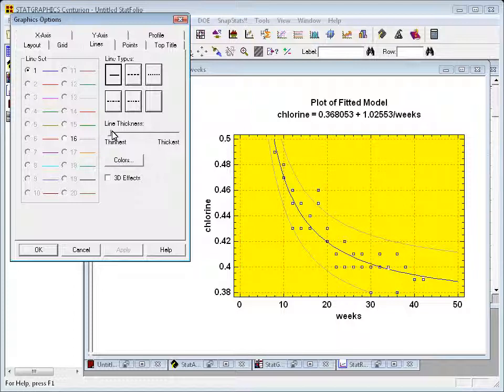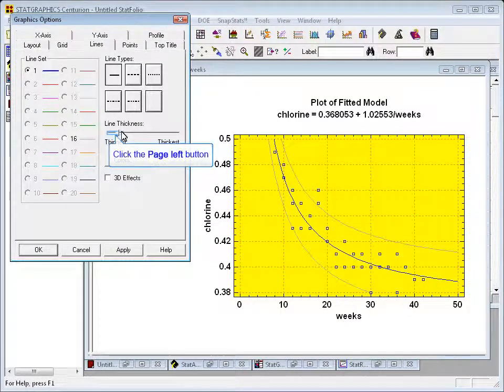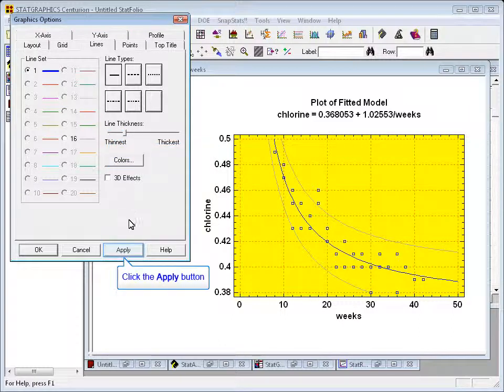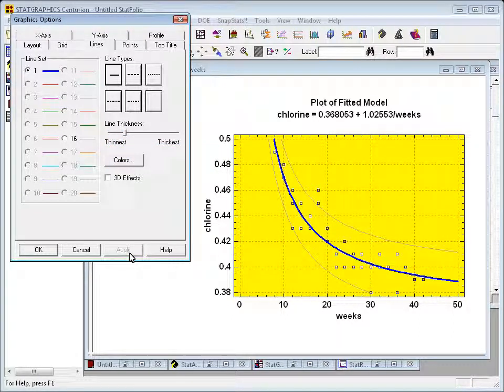Now, I can change either of those lines by clicking on the appropriate radio button and then picking a different line type or perhaps a different line thickness. What I'm going to do is actually drag this line thickness button over a little bit and hit apply. That gives special emphasis to the center line.